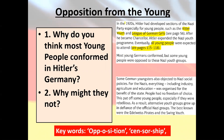Some were opposed to these Nazi youth groups. For the Nazis, everything — industry, agriculture, education — was organized for the benefit of the state. People had no freedom of choice, which put off young people who, like young people today, can be particularly rebellious when it comes to organizations set up to control them.